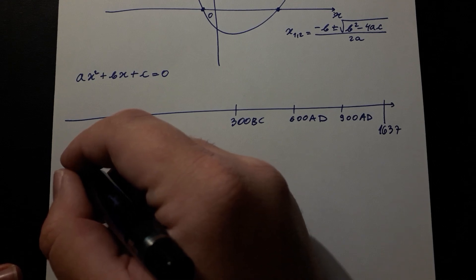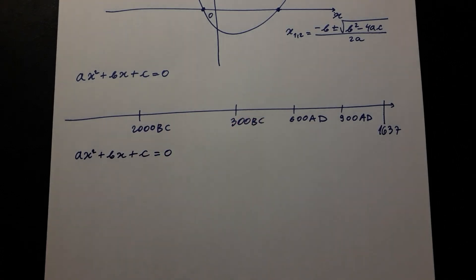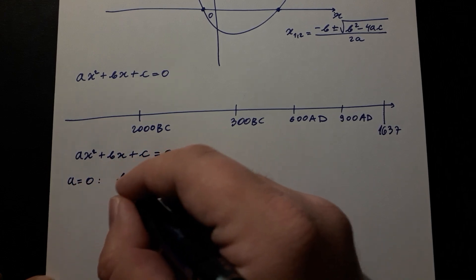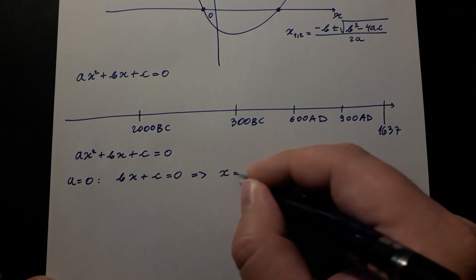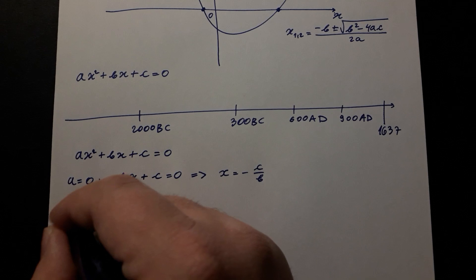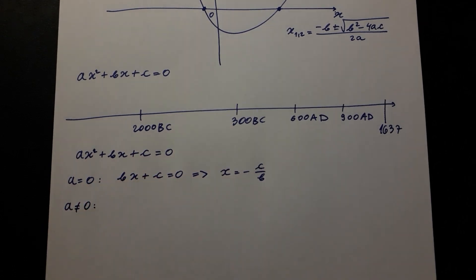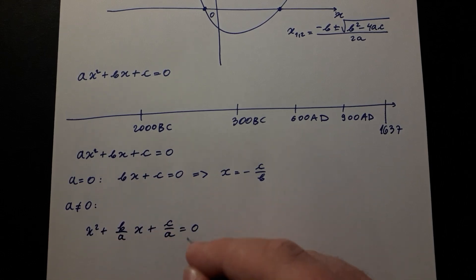We are going to start with the equation ax squared plus bx plus c equal to zero and solve for x to get the quadratic formula. We can start by noticing that for a equal to zero we get a linear equation: bx plus c equal to zero, giving x equal to negative c over b. So for a different from zero, we can divide the entire equation by a, giving x squared plus b over a times x plus c over a equal to zero.